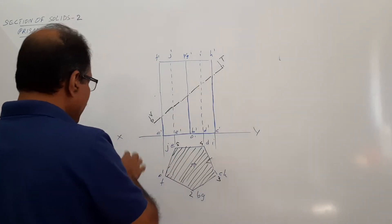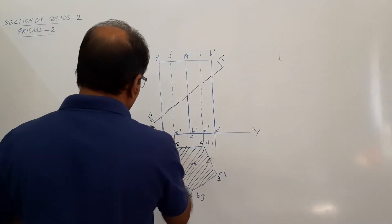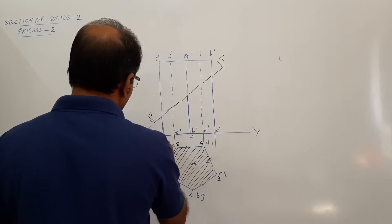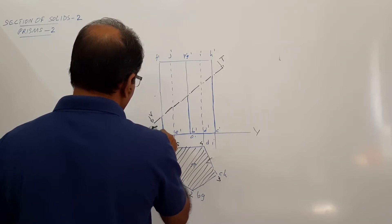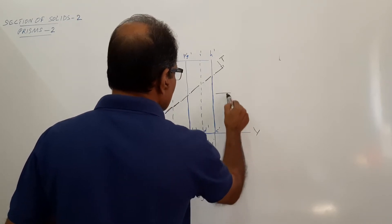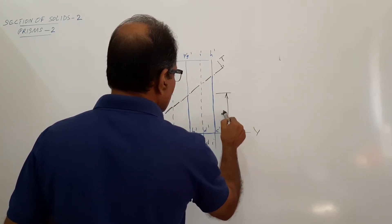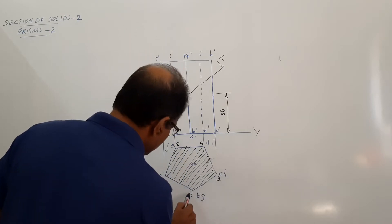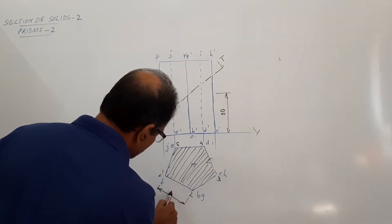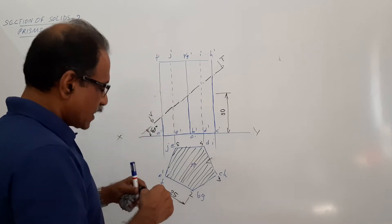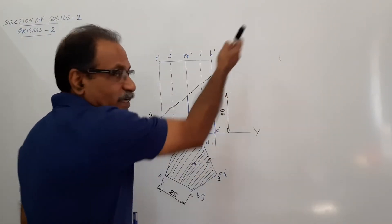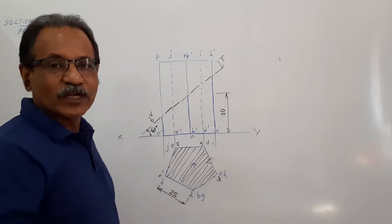Then I draw the cutting plane. The cutting plane passes through the midpoint of the axis and it makes 40 degrees to HP.